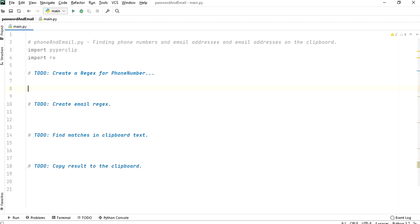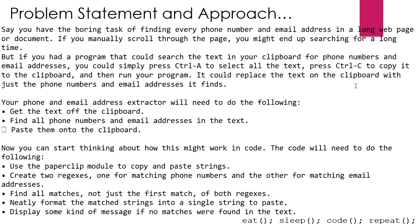Hello and welcome back. In this video we're going to do a project: making a phone number and email address extractor from a clipboard. We're going to get the text of the clipboard, find all the phone numbers and email addresses in the text, and paste them back on the clipboard as our output. We're going to use two modules - the regular expression module for finding the matches.